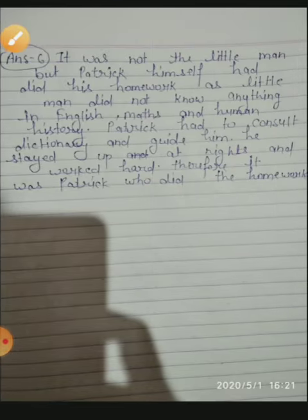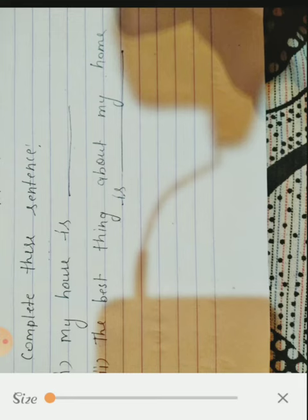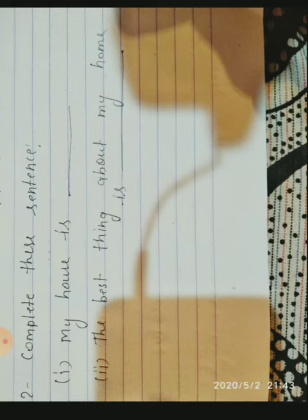Ape second wala kya hai? Complete this sentence. Isko complete karna hai. Ape apne according write kar saktay hai. My house is a - apne house ke baare me. To yeh homework hai. Apne se writer ke ko dikhana hai, notes me.